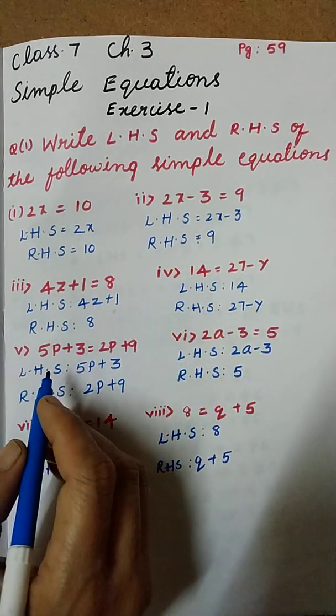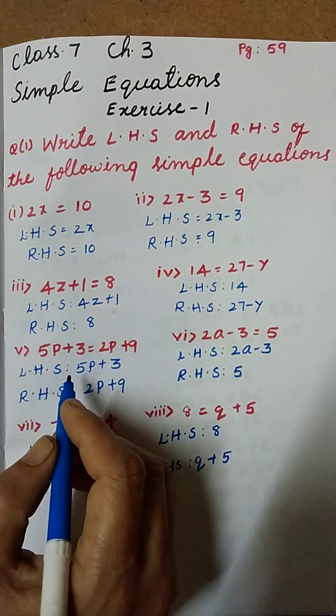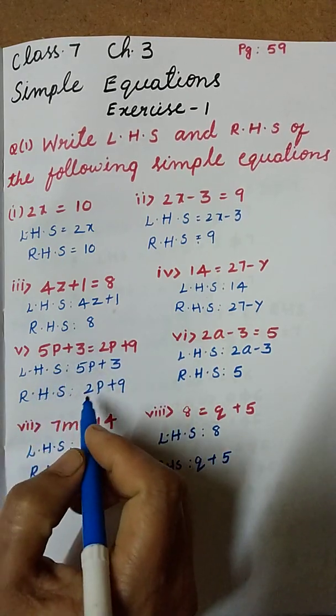And next one: 5p plus 3 equal to 2p plus 9. Here LHS is 5p plus 3 and RHS is 2p plus 9.